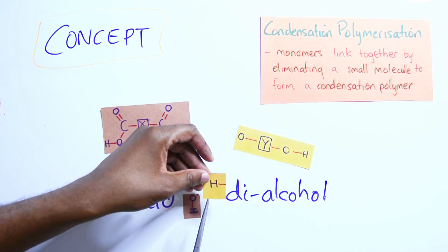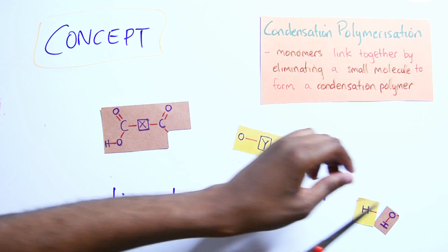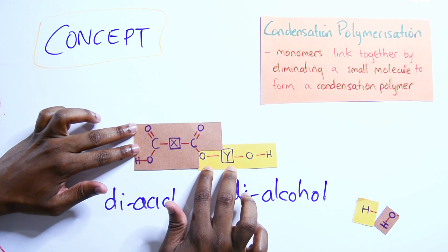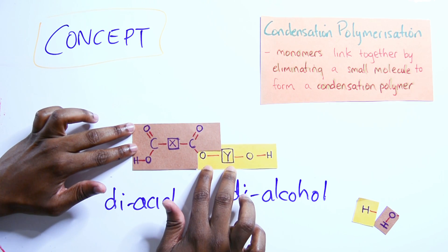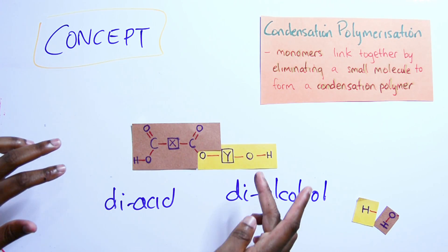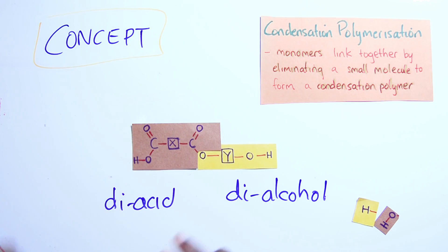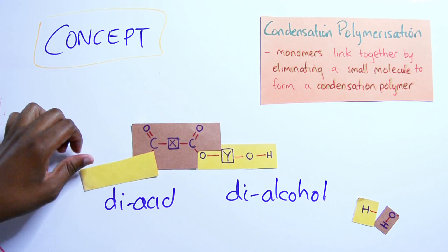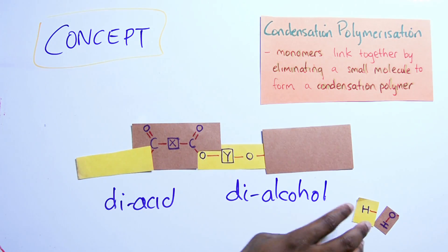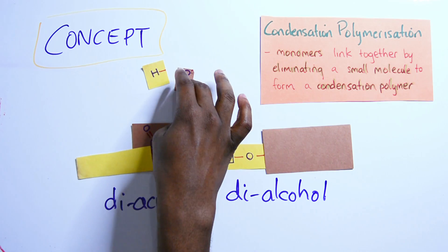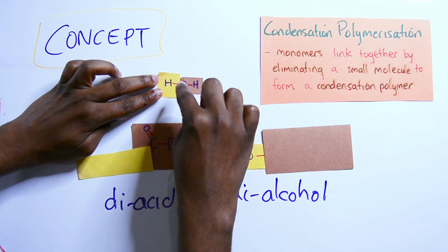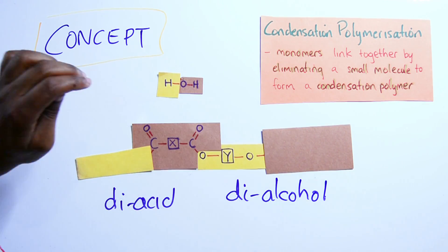The acid and the alcohol join up — the alcohol provides the O — and they link together. If we cut the H from one side and the OH from the other, another alcohol can come from one side and another acid from the other, continuing this pattern over and over. The H and O that are eliminated join up to form H₂O — water.